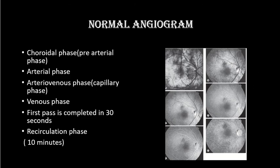This is the picture of a normal angiogram which has different phases. The first is the choroidal phase — we can see the fluorescence provided by the dye in the choroid, but no dye filling the arteries and veins on the retinal surface yet. After that there is the arterial phase, where the arteries are filled; this comes about one second after the choroidal phase.